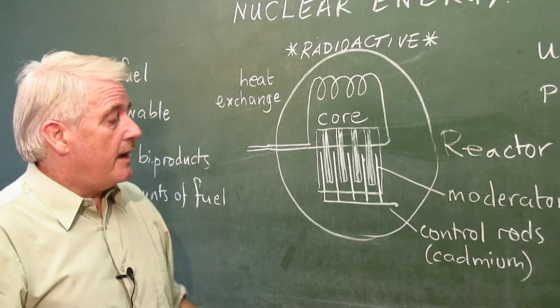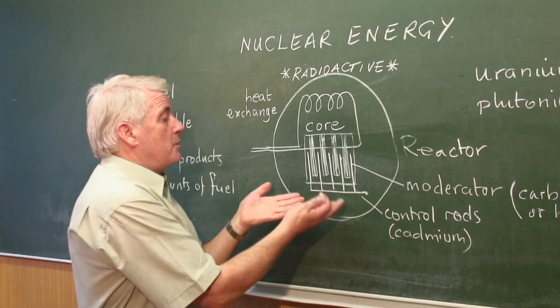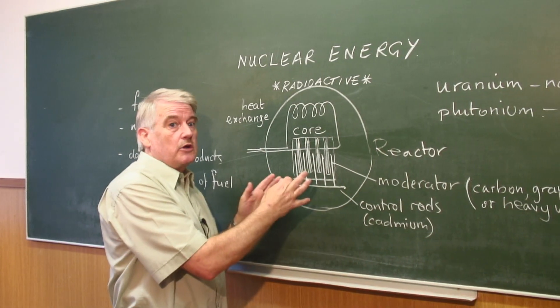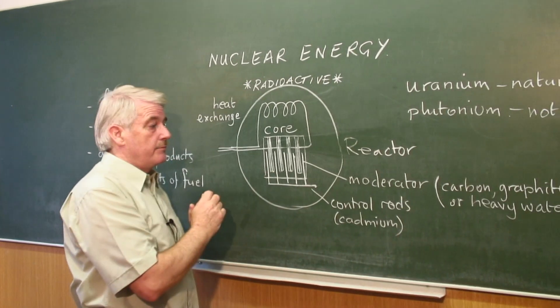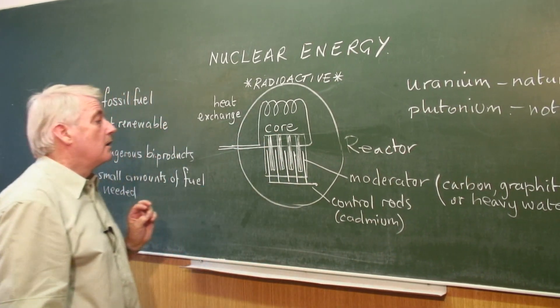In addition, we have things called control rods, which can be pushed into the nuclear reactor when it's working, and shut it down. And they do that by controlling the reaction in the core.